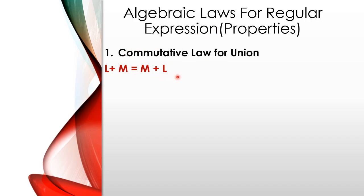Now for concatenation: L into M is equal to M into L? Let's check with an example. Suppose L is A and M is B. Then L into M is AB, and M into L is BA. Since AB is not equal to BA, commutative law is not applicable to concatenation. But commutative law is applicable for union.